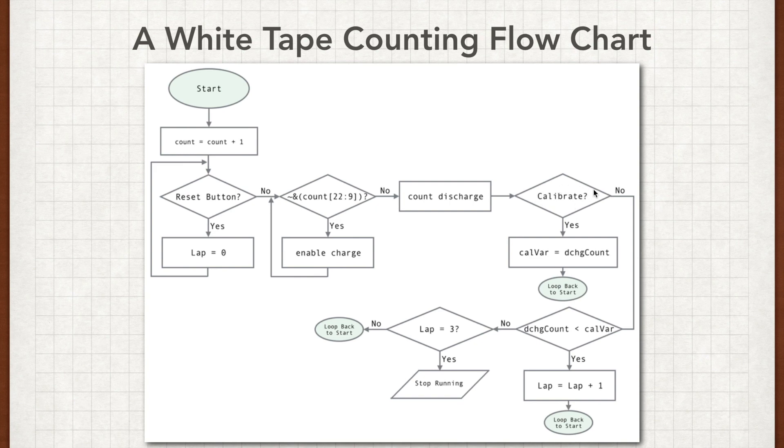If the calibration button wasn't hit, then we're going to go down and we're going to check and see does our discharge count, is that less than calibration variable? If it is less than calibration variable, then we must've had a lap, which is what we were doing with this. And we're going to increase our lap count. If it wasn't less than Cal var, then we're going to check and say, are there three lap counts? If there are three lap counts, we're going to shut this whole thing down. And that was the idea in this project. If you count this three times, stop everything. If there's not, then we're going to loop back to start and start this whole thing over again.